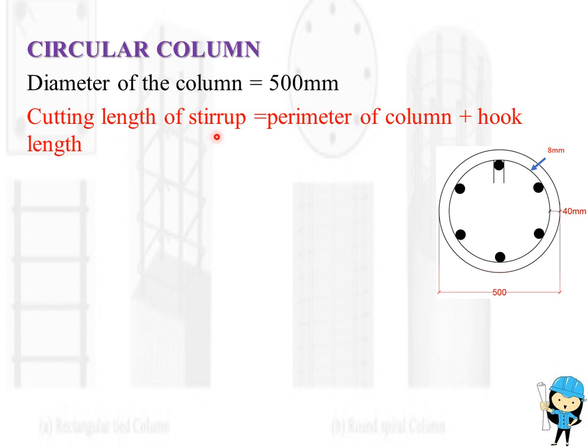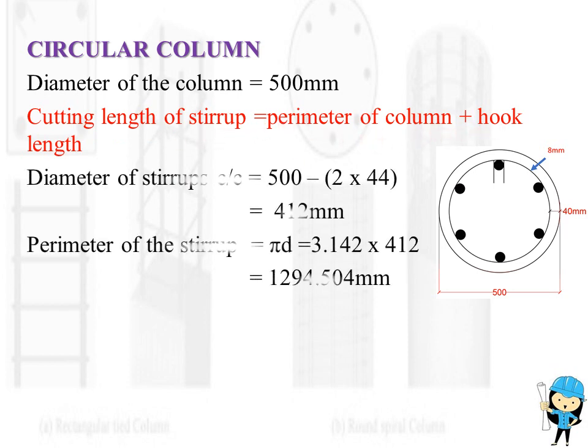Cutting length of stirrup is equal to perimeter of column plus the hook length. Diameter of stirrup center to center is equal to 500 minus 2 x 44. 44 is the value taken from the column dimension, that is 40 mm plus d by 2, that is 8 divided by 2, which will be taken as 44 mm. Therefore, the diameter of stirrup is equal to 412 mm.